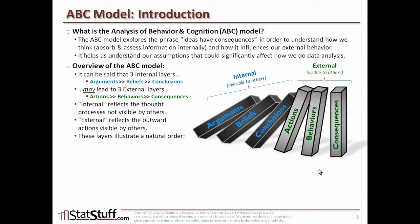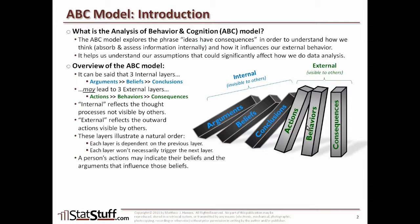These layers illustrate a natural order of how things could flow — each layer is dependent on the previous one. Like dominoes being tipped, actions are only triggered because they were preceded by conclusions, which were tipped by beliefs, which were tipped by arguments. But that doesn't necessarily mean a subsequent layer will always be triggered. A person's actions may indicate their beliefs and the arguments that influenced those beliefs.